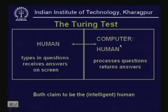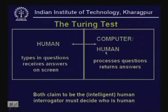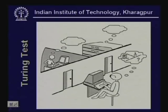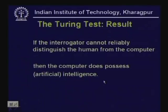The interrogator asks questions, the being inside the room processes these questions and returns answers, which the interrogator receives on a screen. The interrogator has to determine whether the being inside is a computer or a human. If there is a computer inside, it tries to convince the interrogator that it is actually a human in the way it answers questions. This is a schematic diagram of the Turing test.